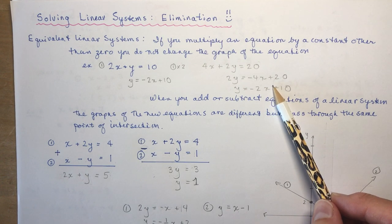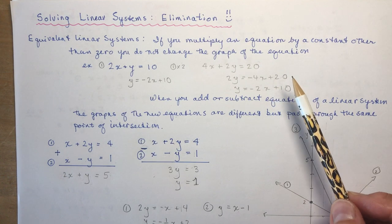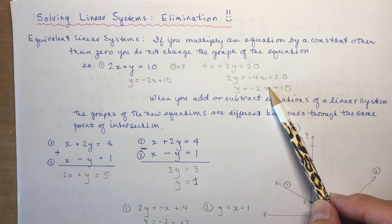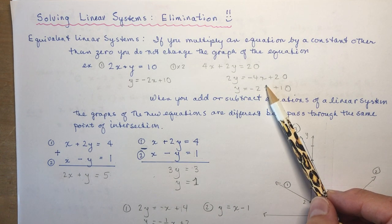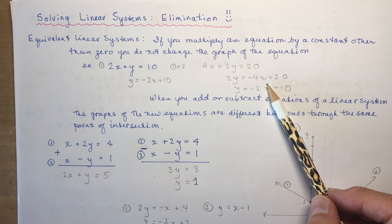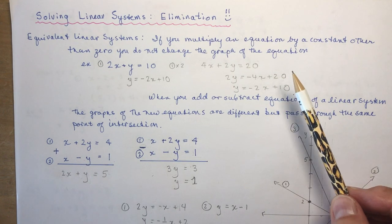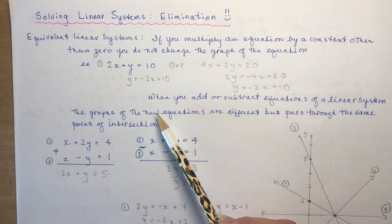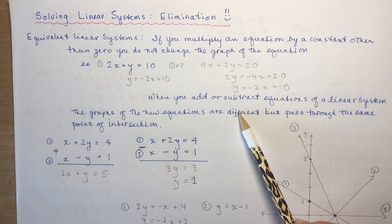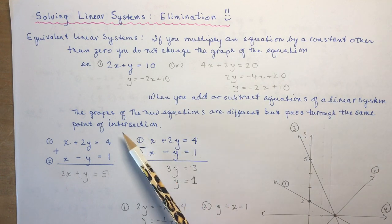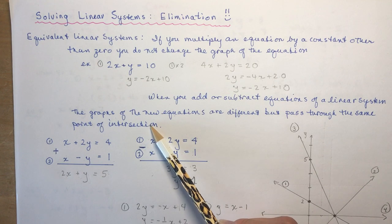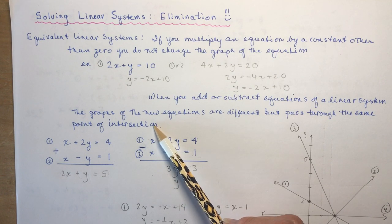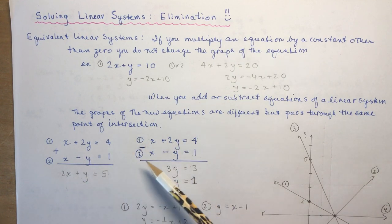This is important because when solving a linear system we want to know where the lines intersect. In elimination, we're going to add or subtract equations together to get a new equation. It's important to understand that when you add or subtract equations of a linear system, the graphs of the new equations are different lines, but they pass through the same point of intersection — which means we can solve the original system by working with these equations in different ways.